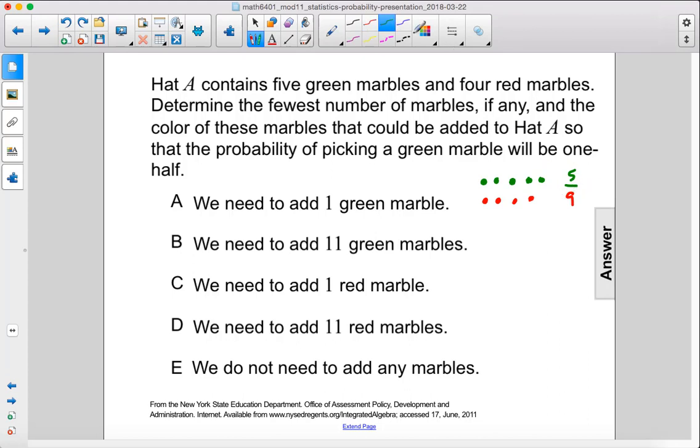We want this to be one-half, which would also be 5 out of 10. 5 out of 10 is the same as one-half probability, so if we add a fifth red marble, we will get this one-half probability. So let's add 1 red marble.